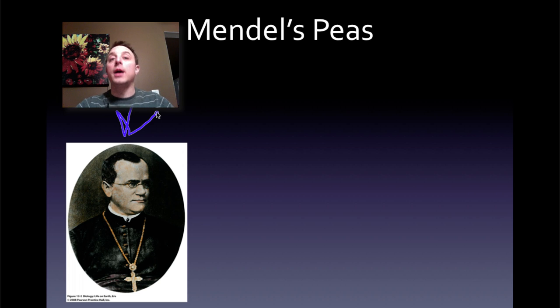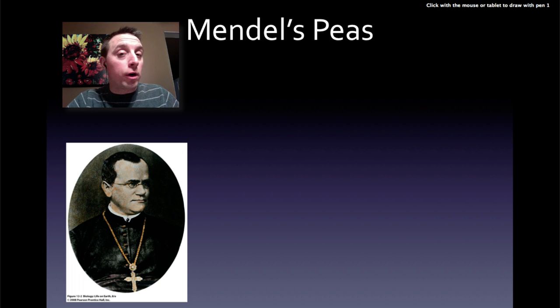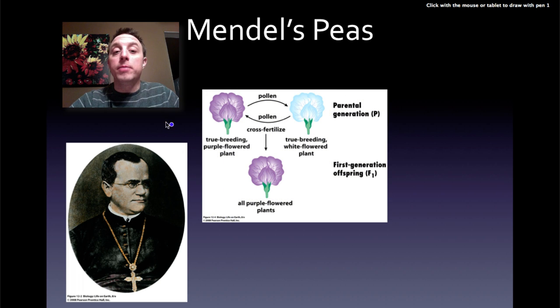who worked out a lot of the rules of inheritance and how the patterns of inheritance, how traits are passed on from generation to generation. He was a monk who lived in what is now the Czech Republic, back in around the 1860s. He was a contemporary of Darwin, though it's doubtful that their ideas ever crossed paths. And his model organism of choice was the ordinary garden pea.